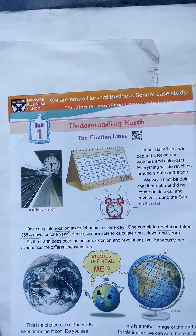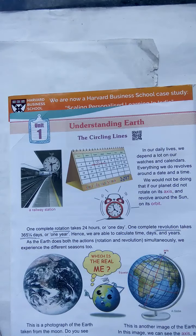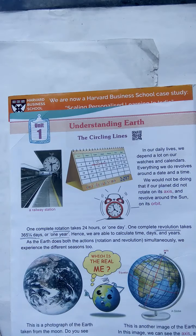See here children, one complete rotation takes 24 hours — it means one day. One complete rotation takes 24 hours or one day. Revolution means it takes 365 days. 365 and one-fourth days are one year. On that time only we are able to calculate time, days and years.